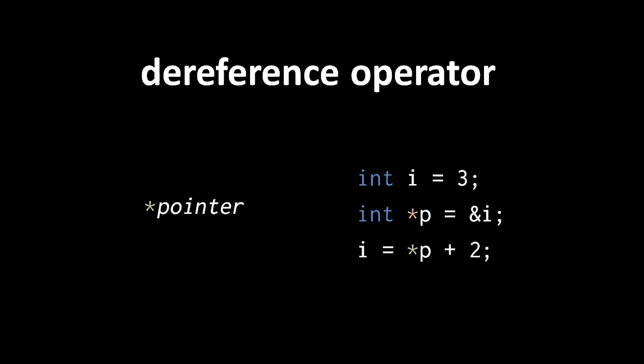Here we have an int variable i with a value 3, then an int pointer variable p to which we assign the pointer representing the address of i. In the last line, we use the dereference operator to get the int value at the address represented by the pointer p, and then add this int value to 2. Because p represents the address of the variable i, which currently has the value 3, this adds 3 to 2, and so the new value assigned to i is 5.